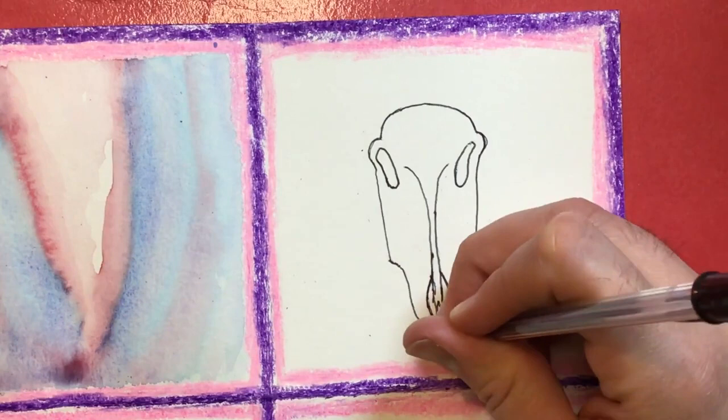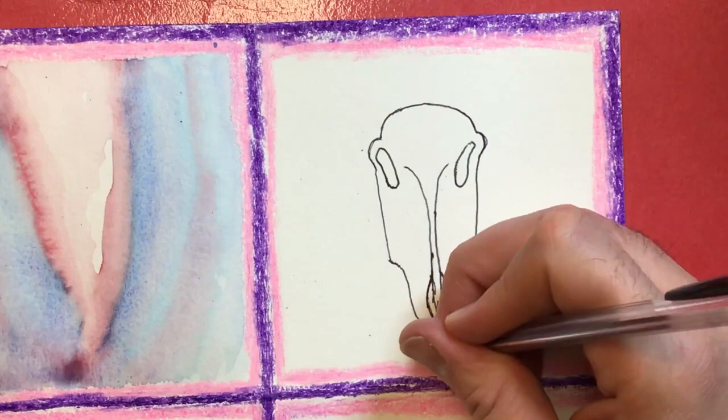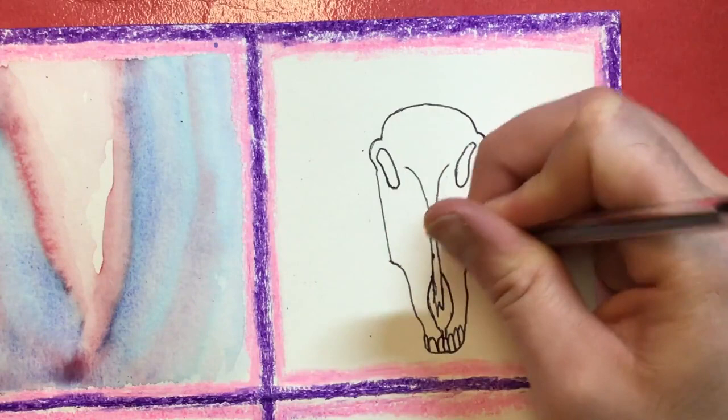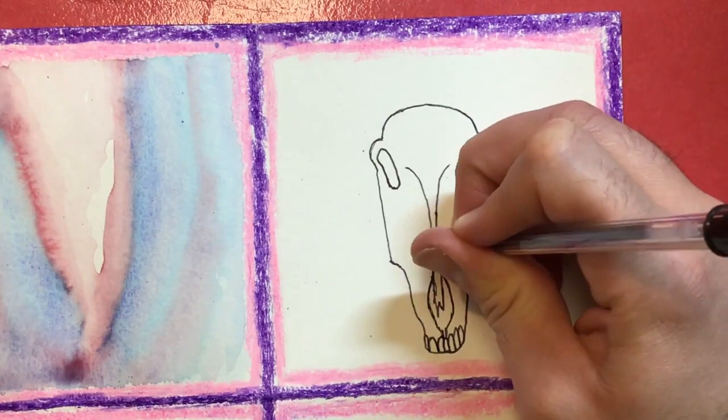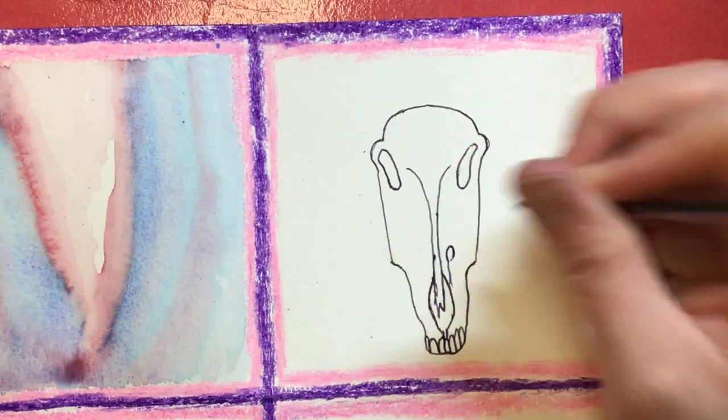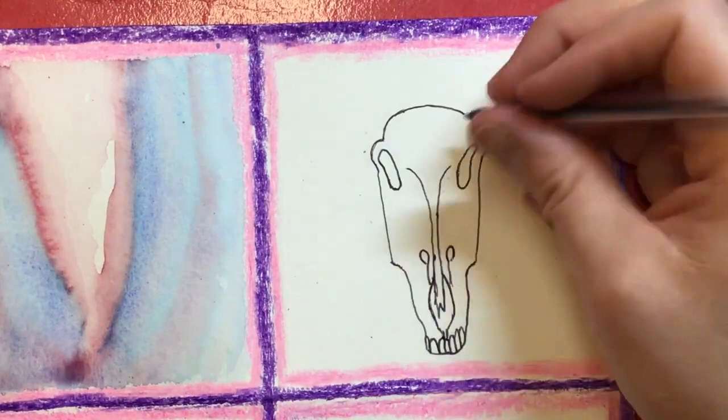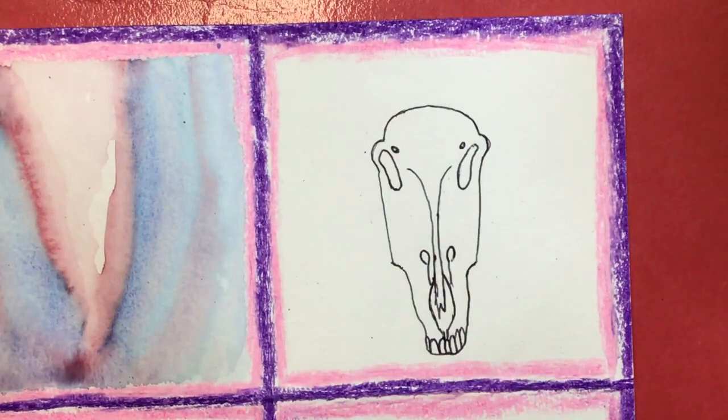Like that right there. And then down here we have the little teeth. And then we're going to draw... Here we go. Like that. And then there's another one on the other side that's similar. Just goes the opposite direction. There's a little dot up here by the eye. There's a little dot over here by the eye.